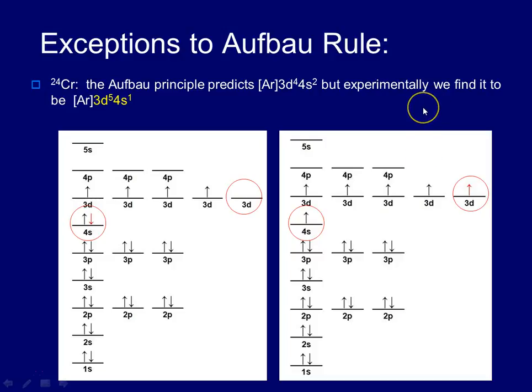So you'll find that all of the exceptions that I highlight today follow this same general trend, where instead of a paired 4s or 5s sublevel, you have one electron in the S and a more stable D configuration.